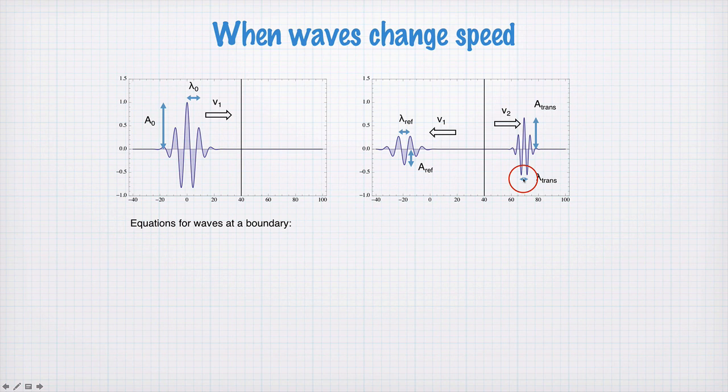The equations for waves at this boundary go like this. The ratio of the reflected amplitude to the incident amplitude is given by this ratio of the velocities. The ratio of the transmitted amplitude to the incident amplitude is given by this ratio of the velocities.